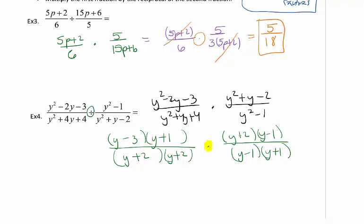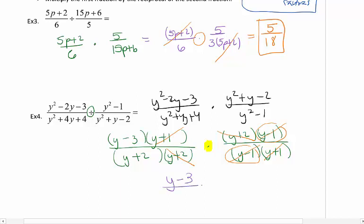Now I can cancel any like factors that are in the numerator and denominator. So a y plus 1 cancels. A y plus 2 cancels. And don't forget here, these y minus 1s cancel. So scanning what I have left over, I have left over a y minus 3 over a y plus 2.